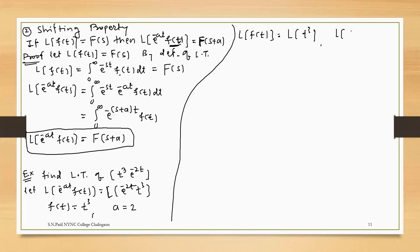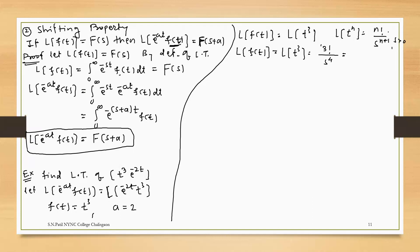We have the formula: the Laplace of t raised to n is n factorial divided by s raised to n plus 1. Here n is 3, so the Laplace of t raised to 3 is 3 factorial divided by s raised to 4. 3 factorial means 3 into 2 into 1, which is 6. So F(s) equals 6 upon s raised to 4.